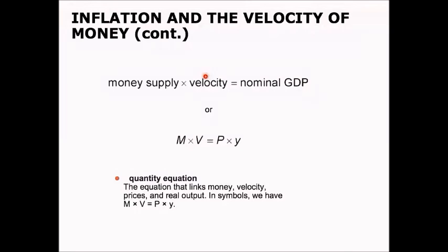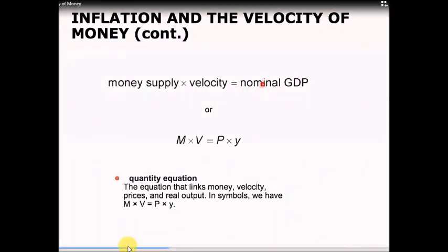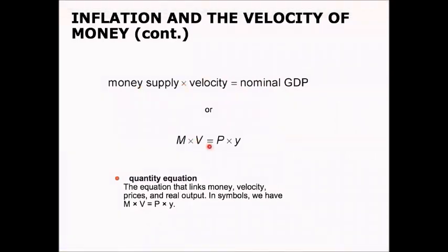The quantity equation takes the definition of velocity and moves it around a little bit. Where velocity was nominal GDP divided by the money supply, we can then say nominal GDP is equal to the money supply times velocity. Or M times V is equal to P times Y, where P is the price level and Y is real GDP. So the quantity equation links the money supply and velocity to prices and real GDP in an economy.